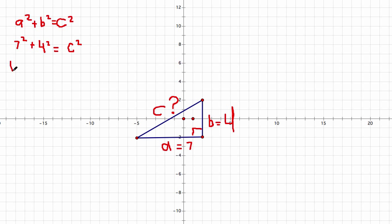Seven times seven is forty-nine. And four times four is sixteen. Forty-nine plus sixteen equals C squared.